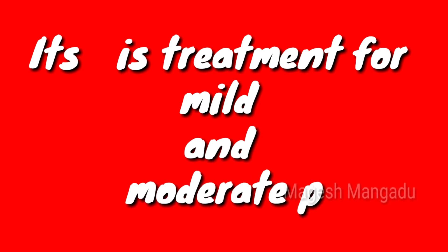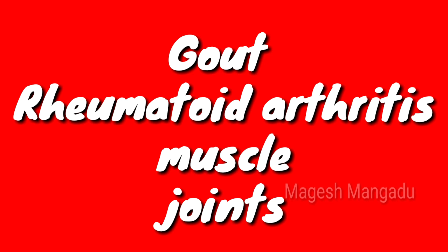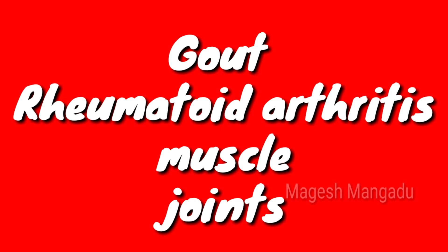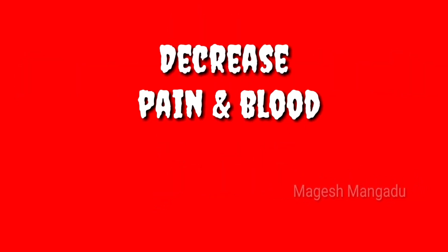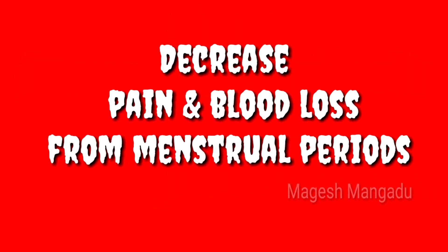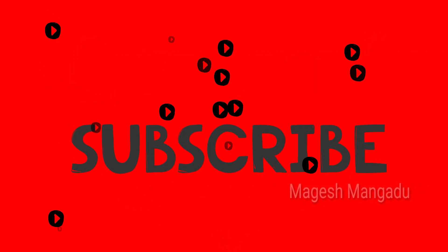Its uses: it is used for the treatment of mild and moderate pains like gout and rheumatoid arthritis, muscle pains, and body joint pains. It is also used for decreasing pain and blood loss from a menstrual period. The medical term for this is dysmenorrhea, as well as acute pains.